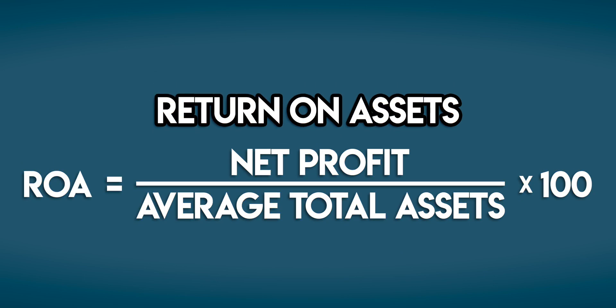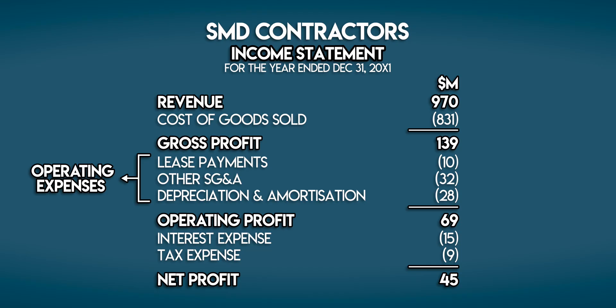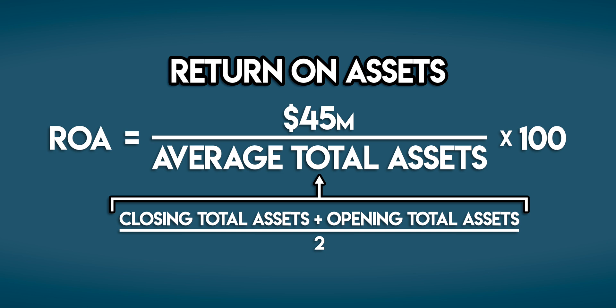Remember, return on assets equals net profit divided by average total assets, multiplied by 100. And average total assets equal closing total assets plus opening total assets divided by 2. We'll start with net profit, which can be found on the bottom line of SMD Contractors' income statement — right here: 45 million dollars for the year ended 31st of December. Let's pop that number into our equation.